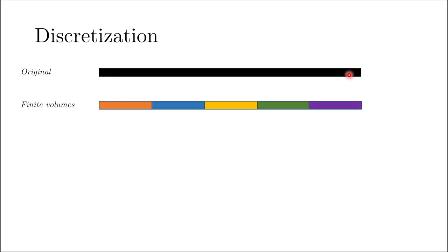Discretization is basically converting your original physical domain into a numerical domain. Using the finite volume approach, we take this rod and divide it into a certain number of parts — we're dividing the entire volume of the rod into finite volumes. Here I've taken the entire rod and divided it into five parts, so each part is called a finite volume, which forms the basis of the finite volume method.